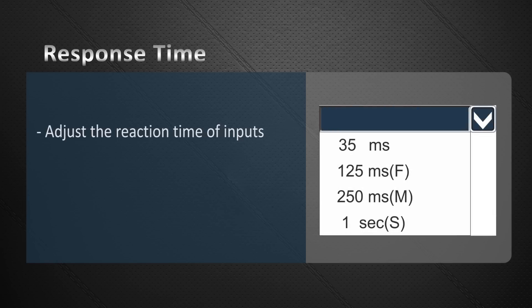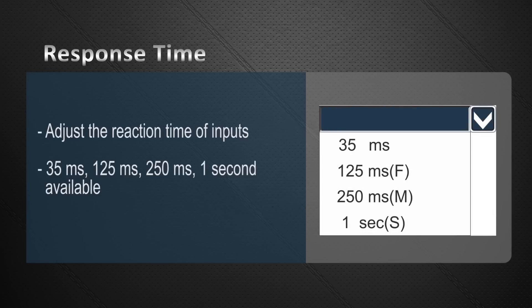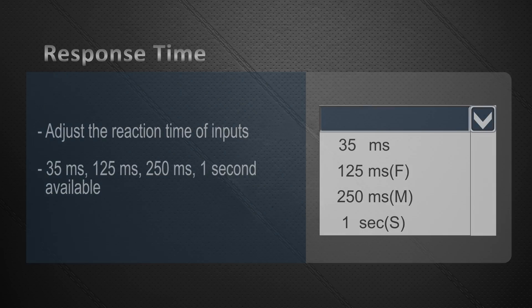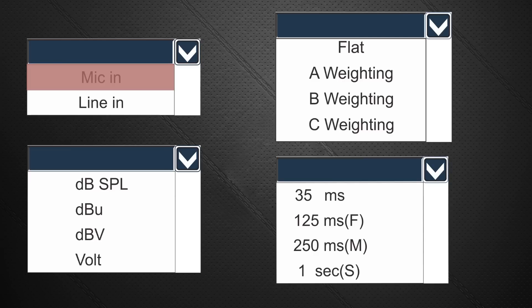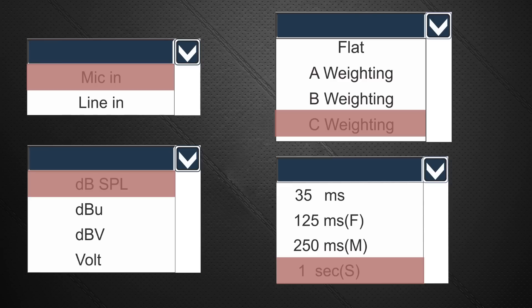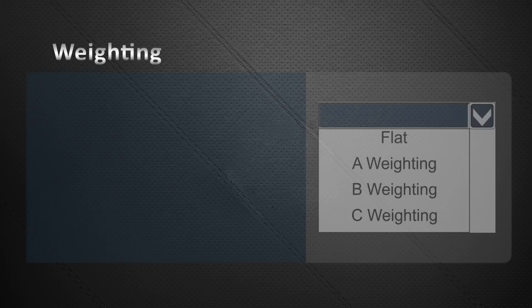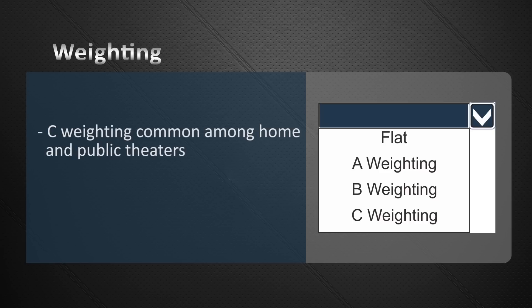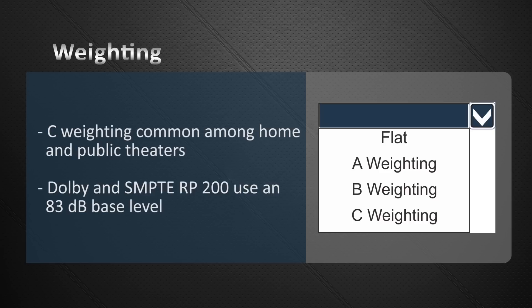Users can also adjust the response time, meaning the reaction of the microphone can be faster or slower. For example, when adjusting our system, we can set the response time at 1 second, play pink noise, and set a C weighting, which is standard for speaker adjustment. Regardless of whether it's a family or public theatre, at a 1 metre distance, a baseline of 83 dB is a commonly used reference point for high and low frequencies. This is the standard used by Dolby and SMPTE RP-200.